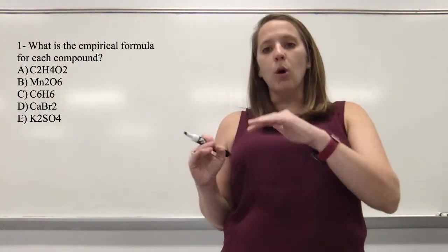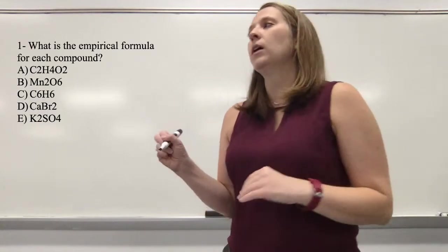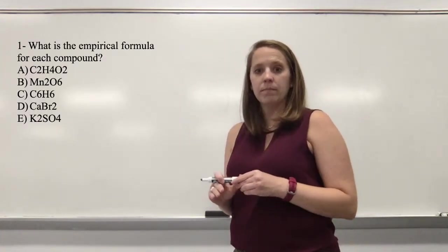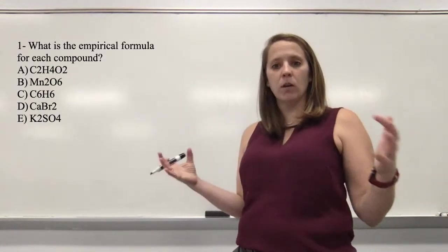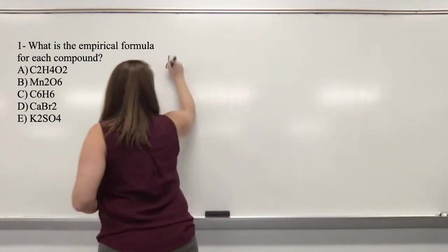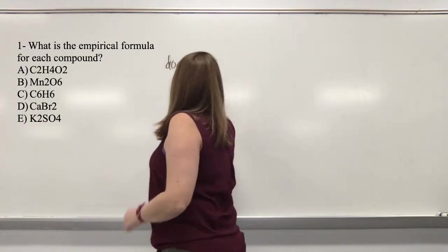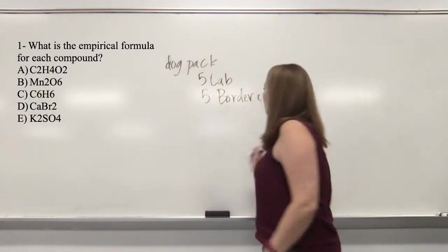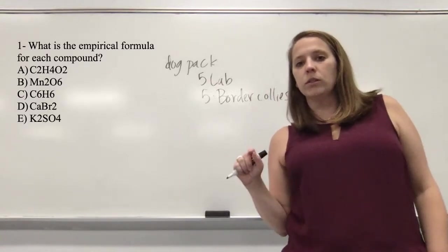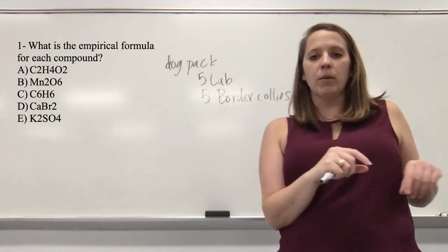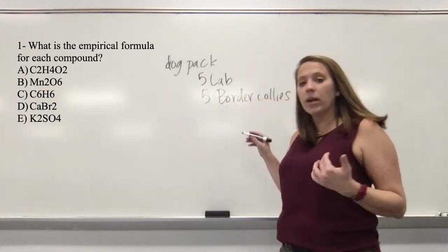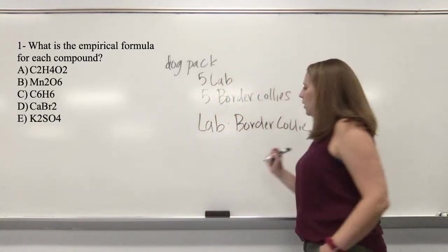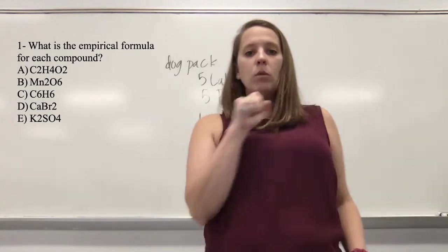Let's think about this in terms of dogs. If you have a dog pack with five Labradors and five Border Collies, the empirical formula is the lowest whole number ratio. Your dog pack of ten dogs has a ratio of one Lab for one Border Collie. So the empirical formula is just the whole number ratio. Let's look at the chemical examples.